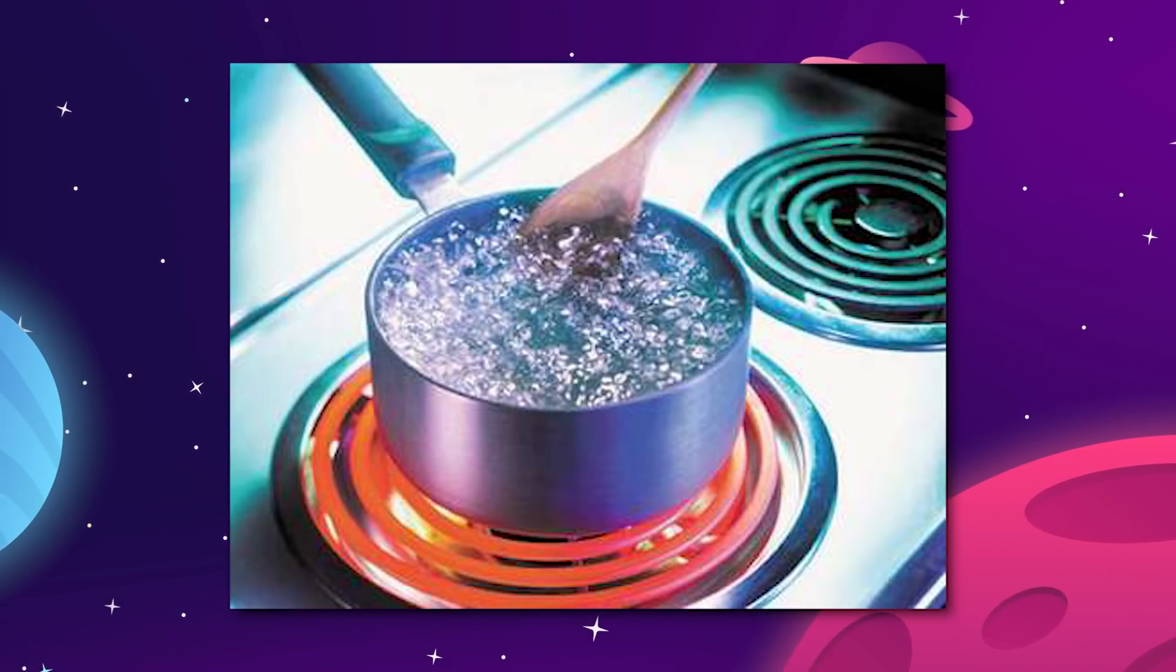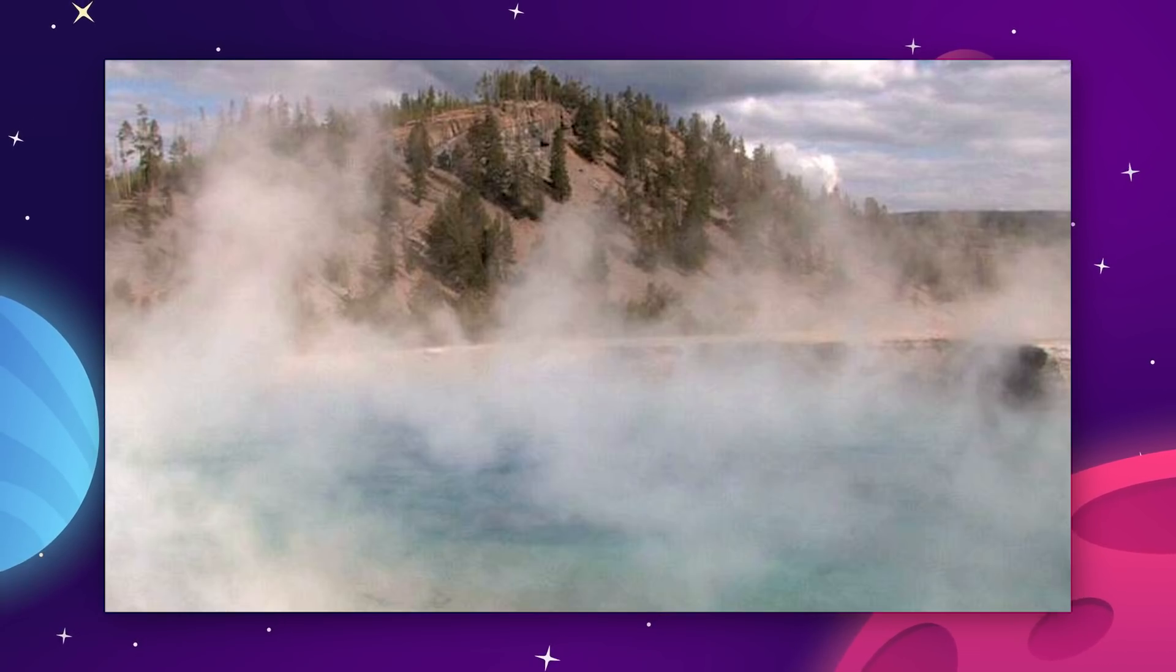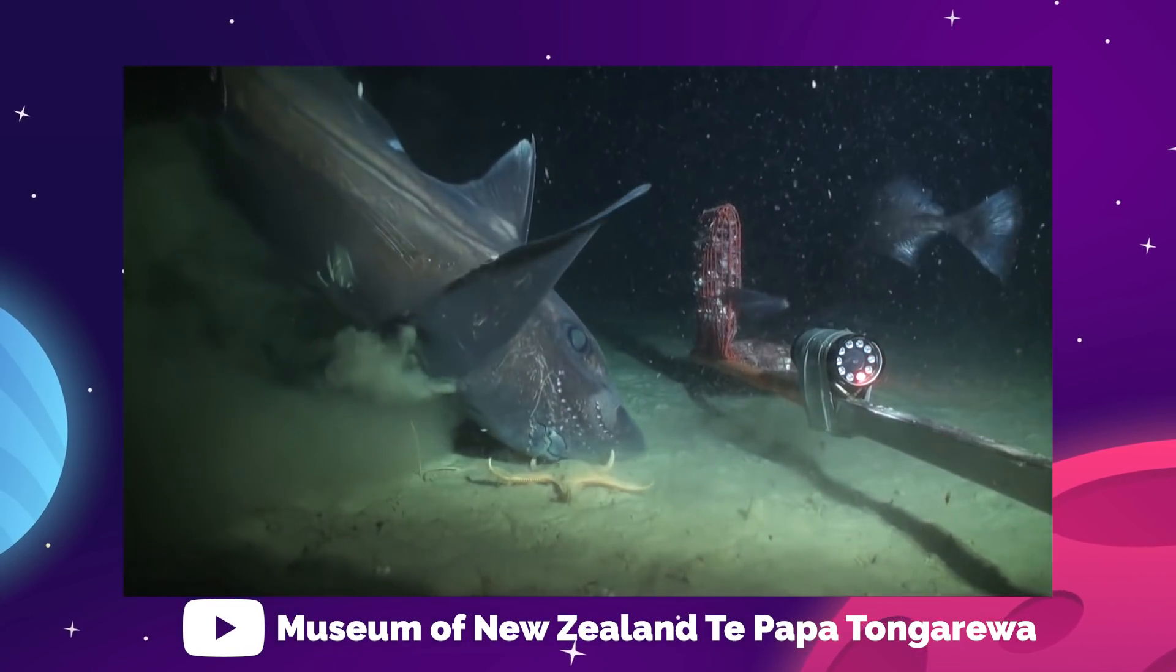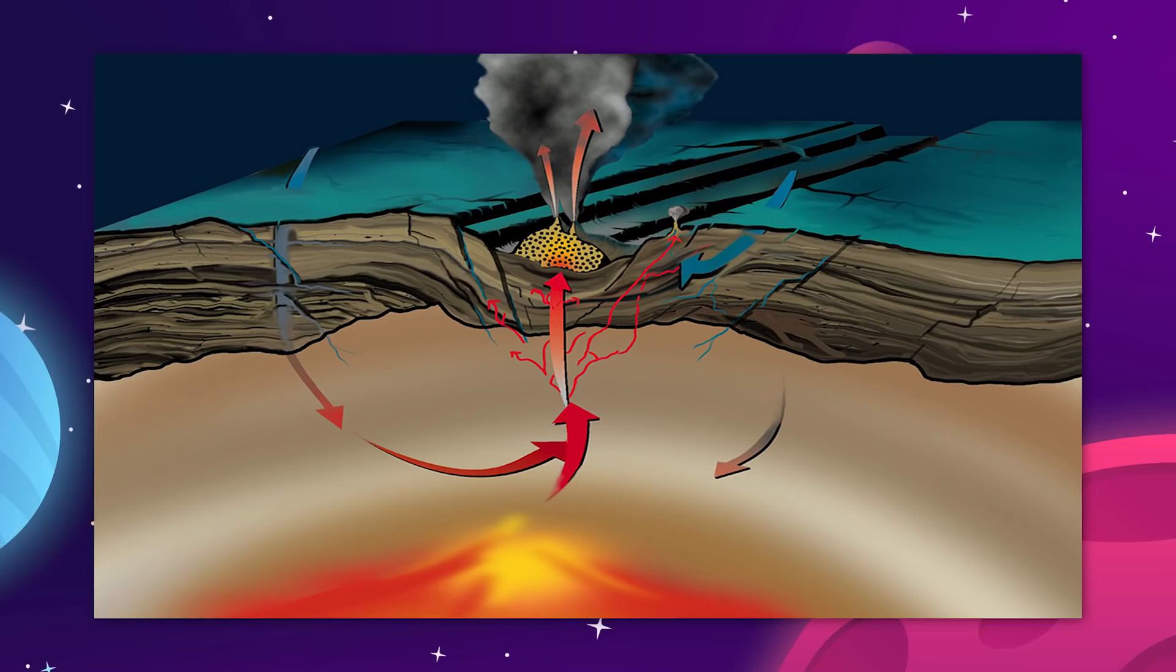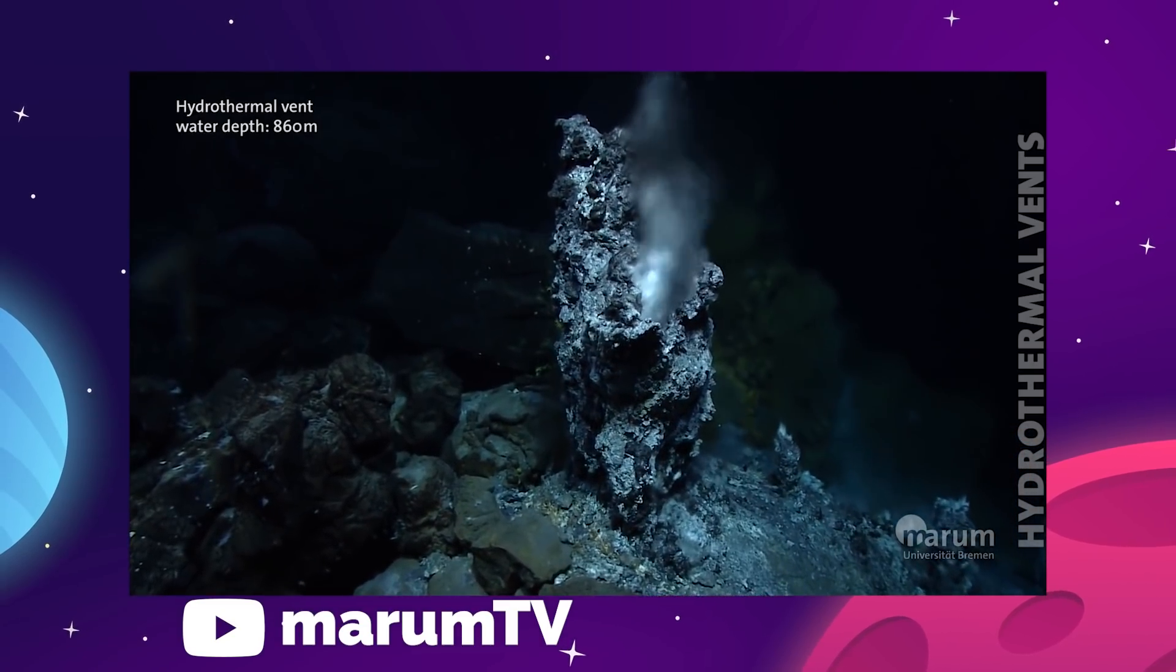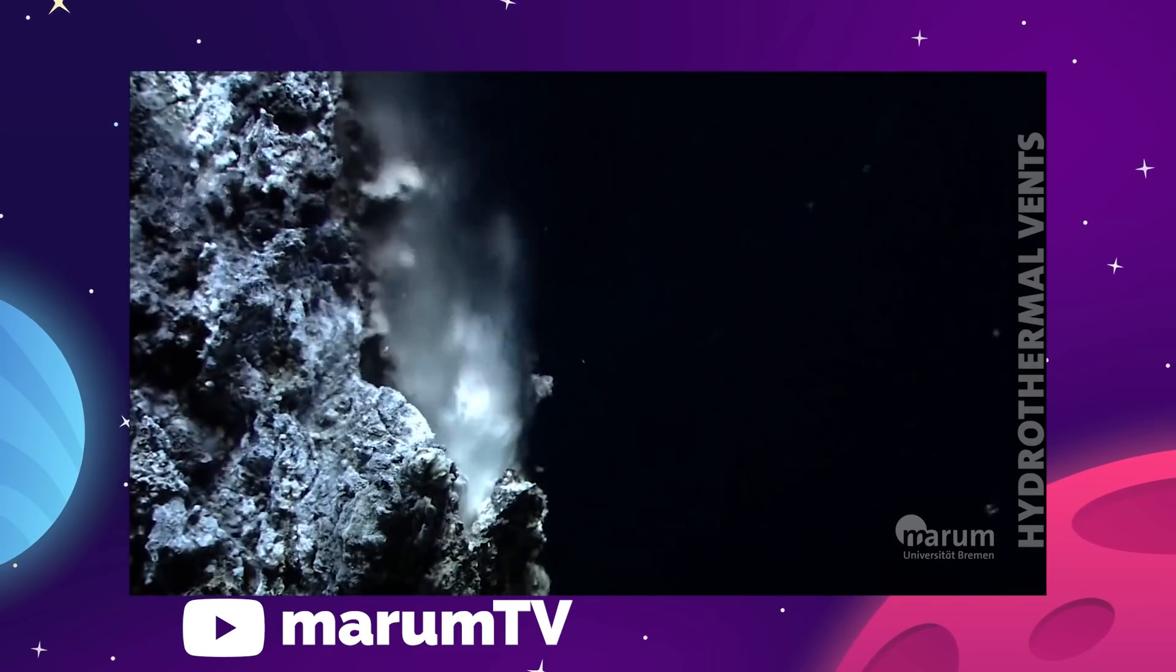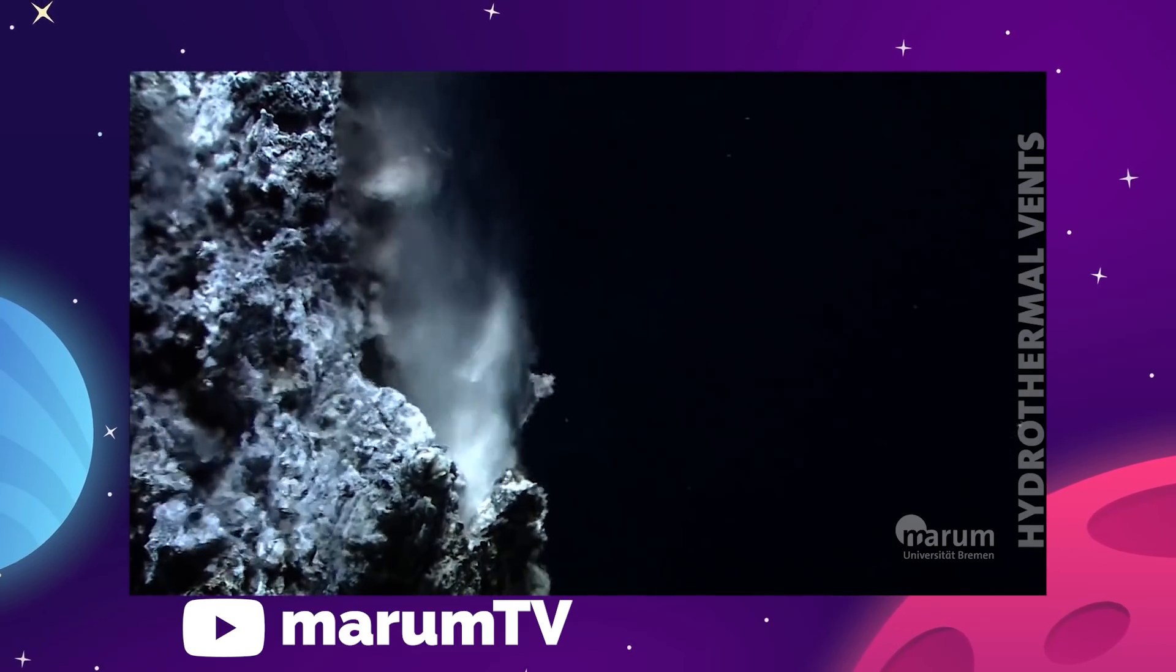And it gets even weirder when you start working in all of the planetary factors that have an effect on the boiling point of water, because the more pressure that you apply to liquid water, the hotter it can get before it evaporates. Take the bottom of our ocean here on Earth. There are these things called hydrothermal vents, where ocean water seeps down through gaps in the tectonic plates and hits liquid magma under the Earth's crust. The superheated water comes back up and forms the hydrothermal vent. But even at temperatures of 370 degrees Celsius, the water does not boil. The extreme pressure at the bottom of the ocean stops the water from converting into steam.